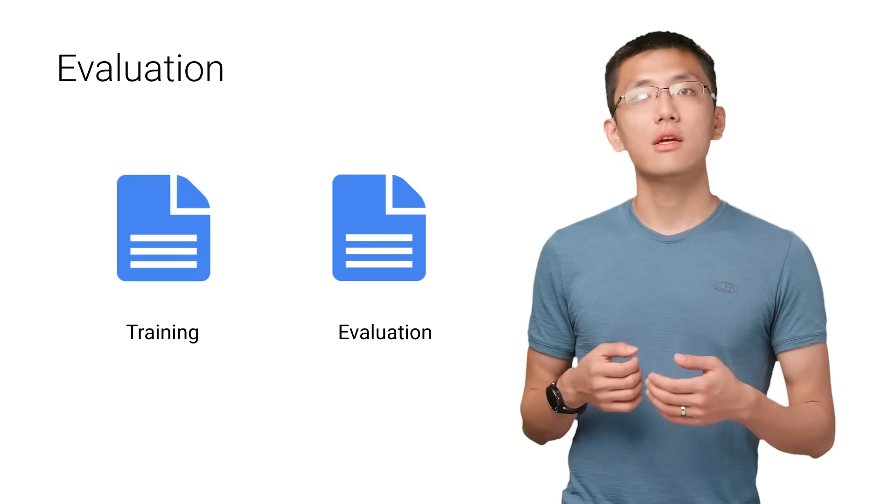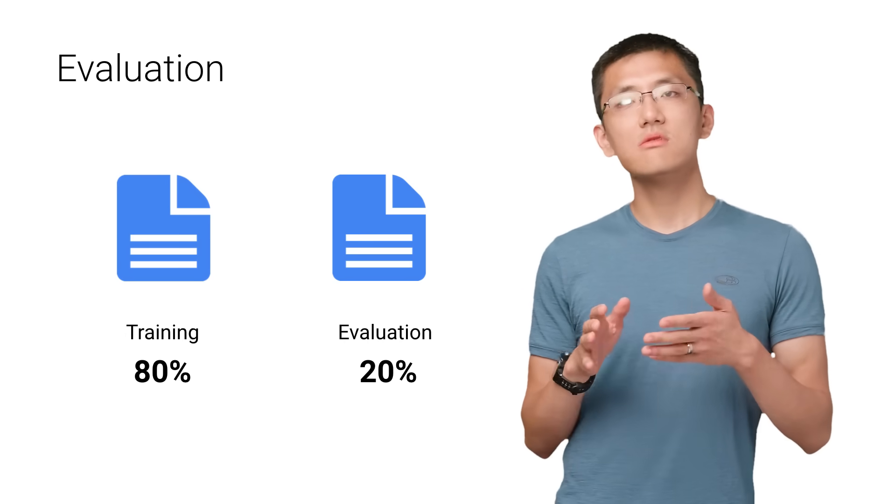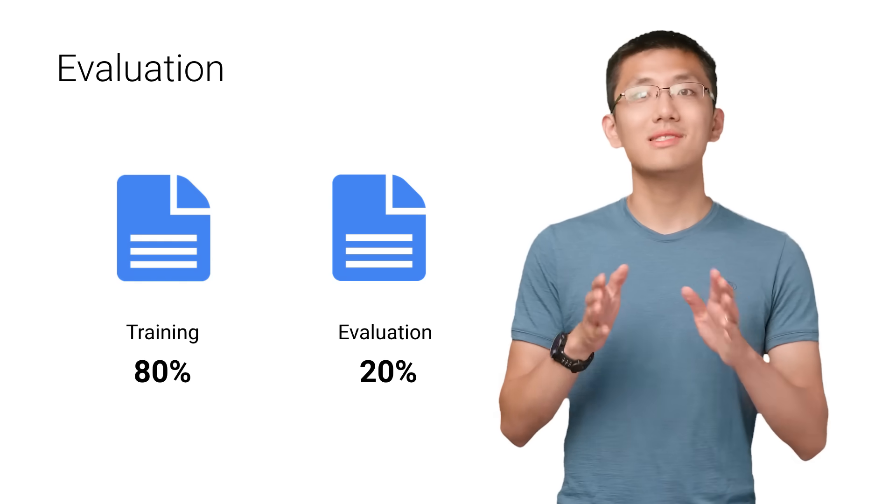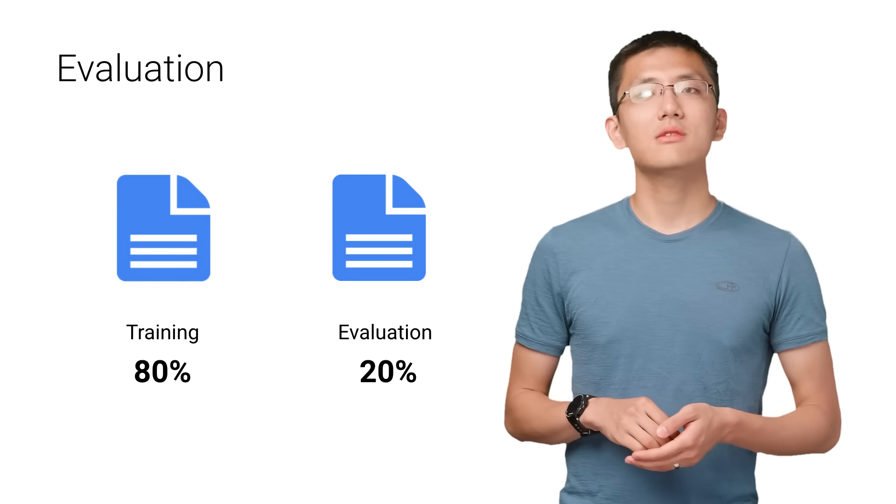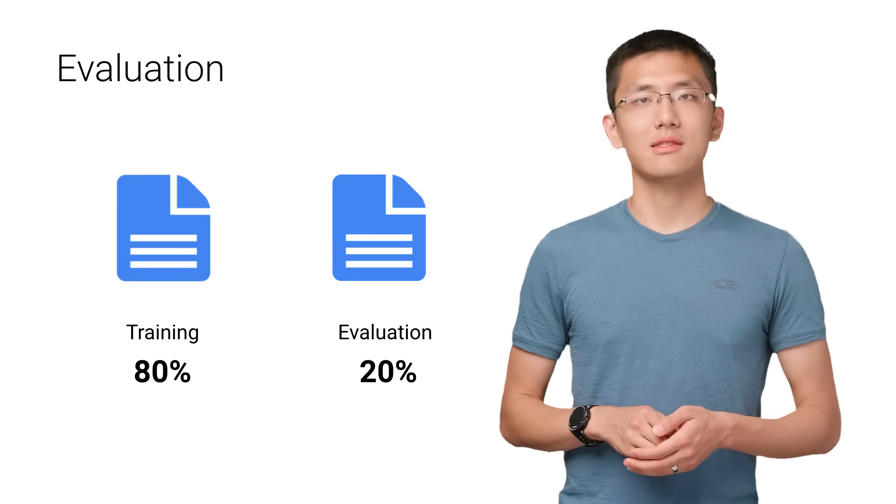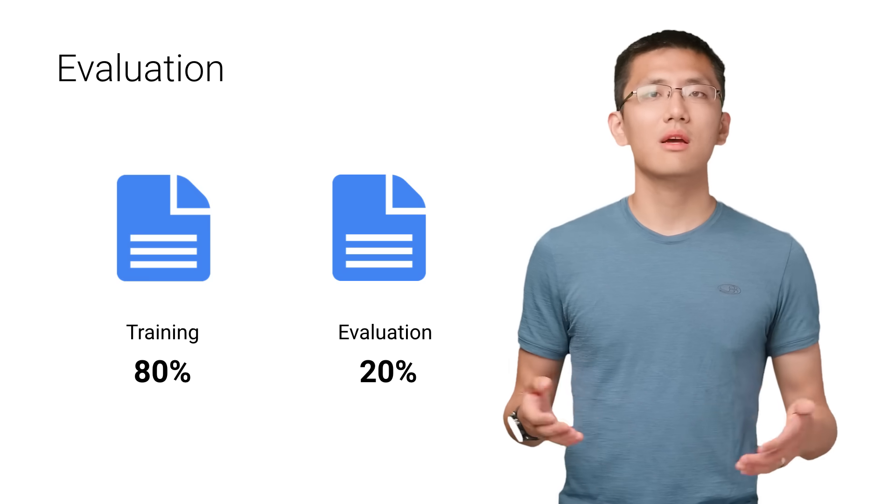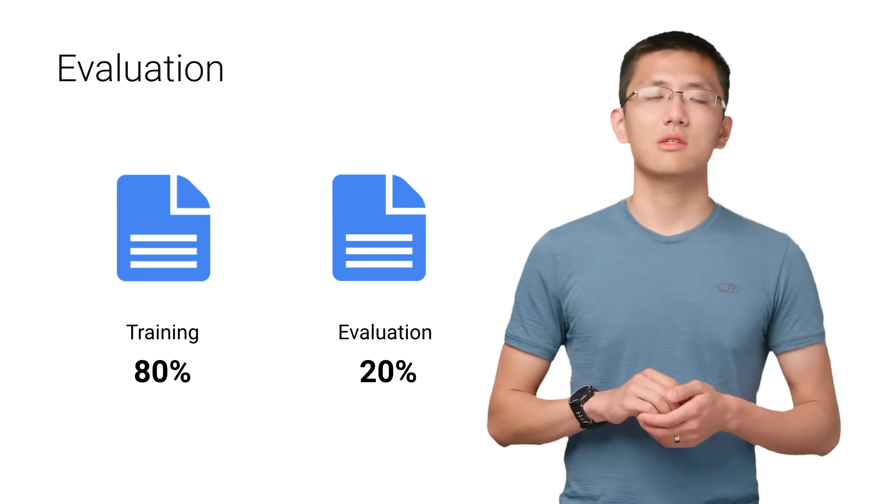A good rule of thumb I use for a training evaluation split is somewhere on the order of 80-20 or 70-30. Much of this depends on the size of the original source dataset. If you have a lot of data, perhaps you don't need as big of a fraction for the evaluation dataset.